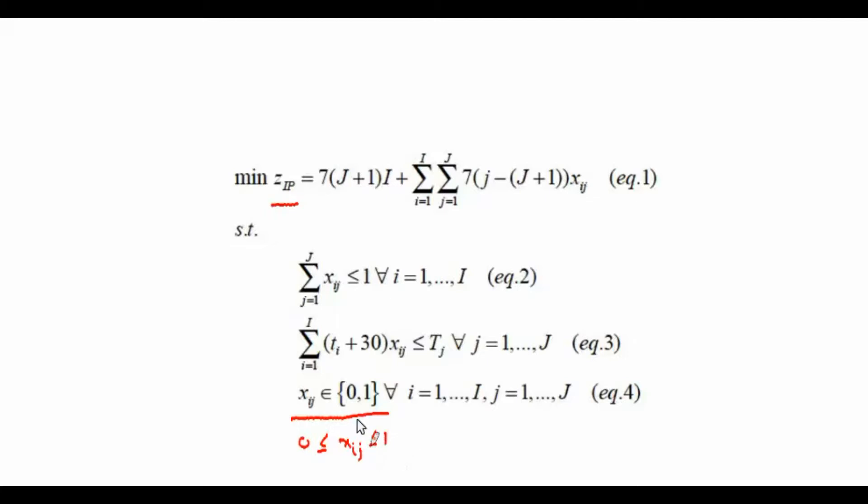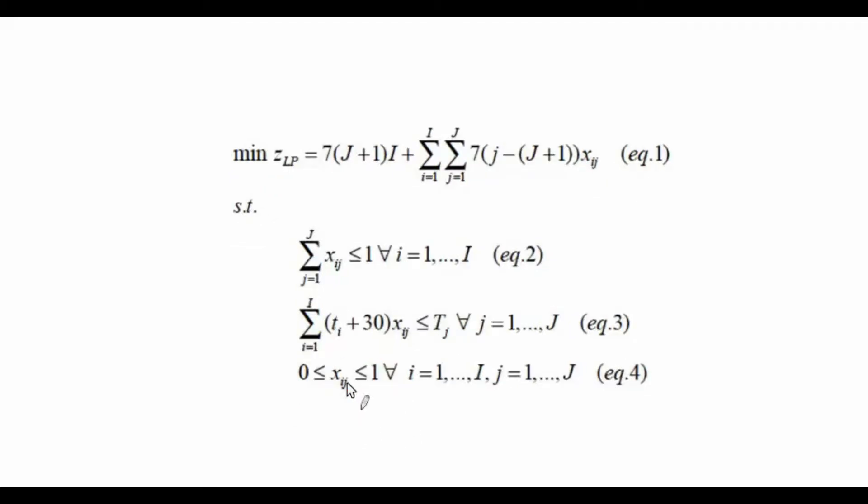We can have a linear program and this is the resulting linear programming relaxation. We have x sub ij is greater than or equal to 0 and less than or equal to 1. Now we denote the objective function value as Z sub LP because this is now a linear programming model.